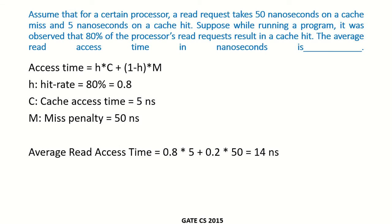This question is related to average memory access time. Assume that for a certain processor, a read request takes 50 nanoseconds on a cache miss — meaning main memory is being accessed — and 5 nanoseconds on a cache hit, meaning the data is found in the cache.